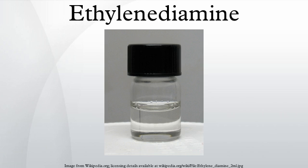Ethylenediamine is the organic compound with the formula C2H4(NH2)2. This colorless liquid with an ammonia-like odor is a strongly basic amine. It is a widely used building block in chemical synthesis, with approximately 500 million kg being produced in 1998.